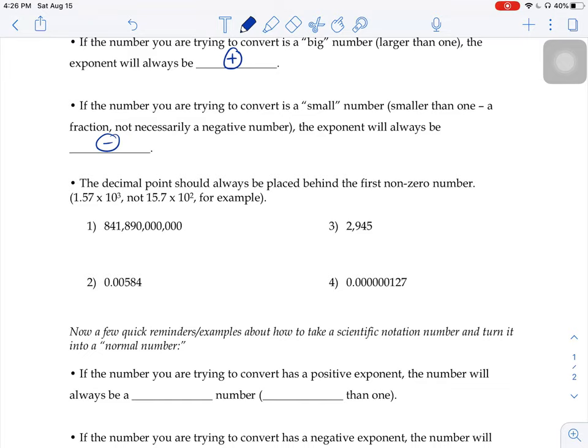you would write 1.57 × 10³, not 15.7 × 10². Technically, those are the same two numbers, but the proper way to write them is with that decimal between the 1 and the 5.